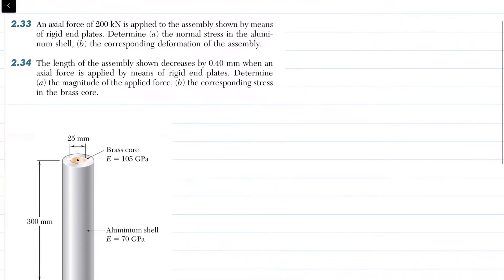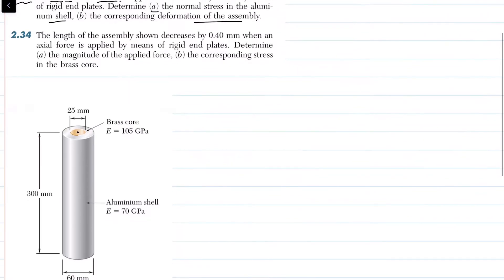Welcome back. Problem 2.33: an axial force of 200 kilonewton is applied to the assembly shown by means of rigid end plates. Determine (a) the normal stress in the aluminum shell and (b) the corresponding deformation of the assembly. You can see this is the aluminum shell and this is the brass core. The modulus of elasticity of the brass core is 105 GPa and that of aluminum is 70 GPa.